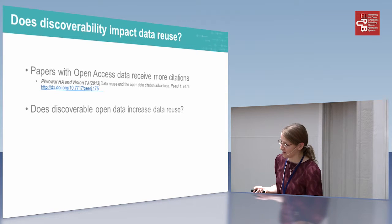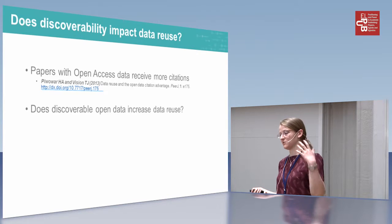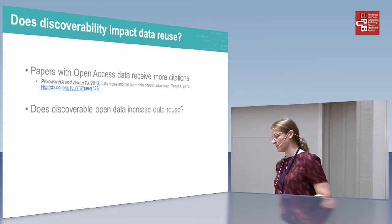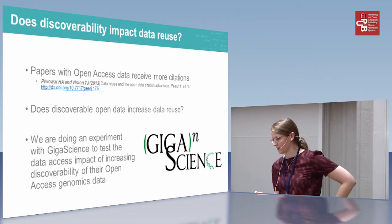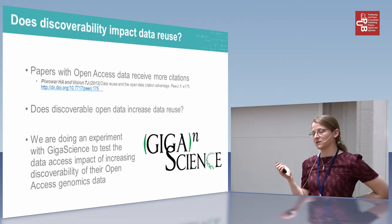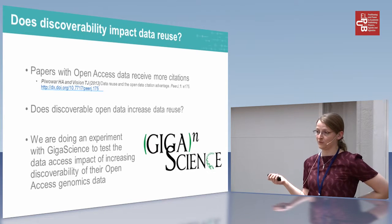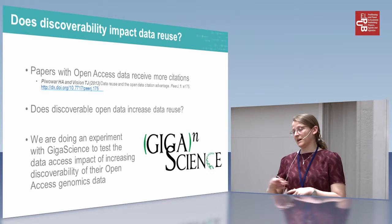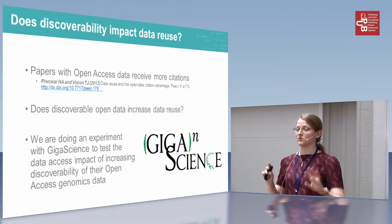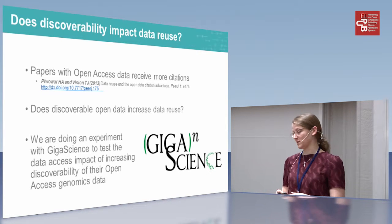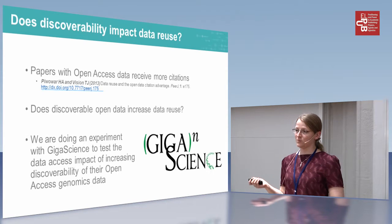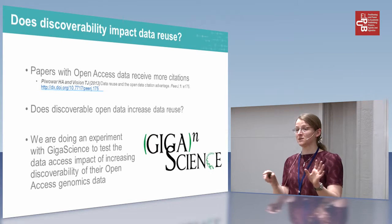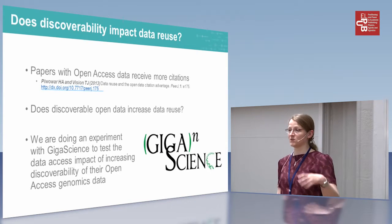As I just pointed out, there's a difference between making data open and making it easy to find. What we'd like to find out is whether making data more discoverable can actually increase its reuse. We're working with GigaScience on an experiment where we are listing part of their open access data on the Repositive platform, giving it more visibility for the target audience looking for that particular type of data. We then want to compare access patterns and download numbers against data that did not get this extra publicity of being listed in a platform specifically targeting their audience.